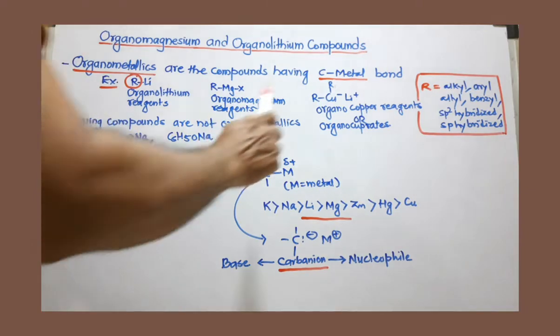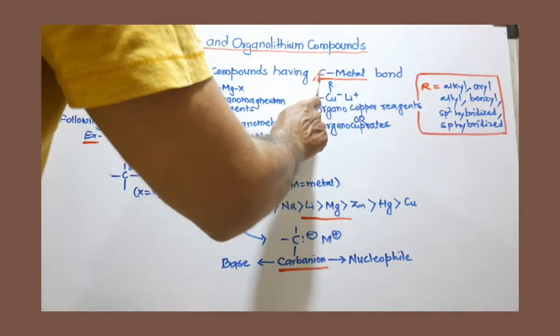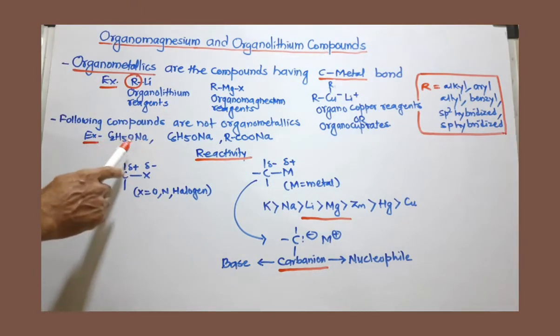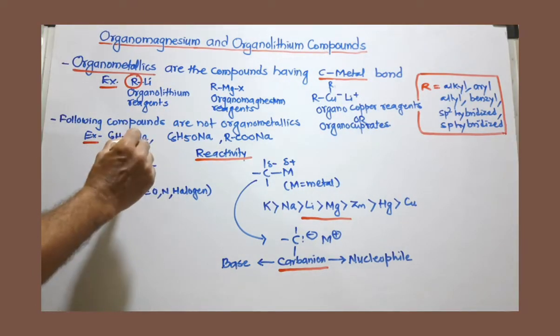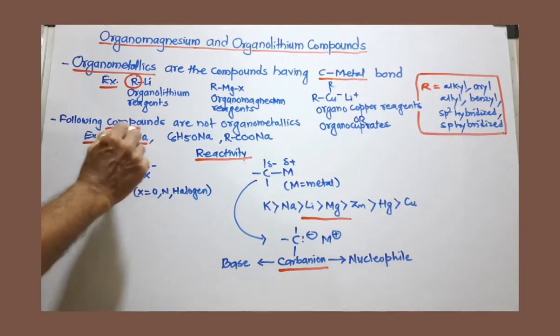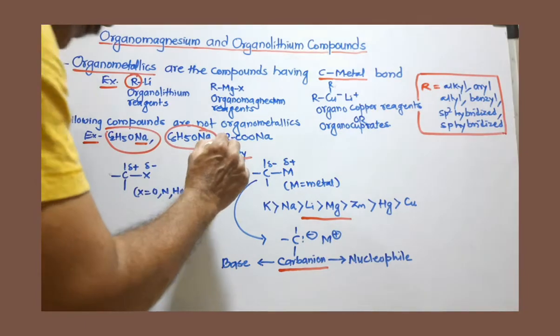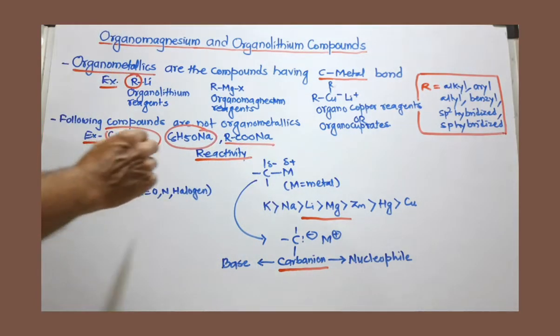So what is important? Important thing is there must be carbon-metal bond. So you can see some more examples I have given here. Sodium is a metal, and this is sodium ethoxide, or sodium phenoxide, or sodium carboxylate. This salt,